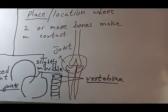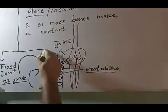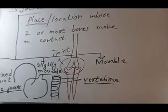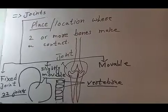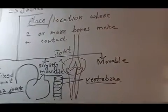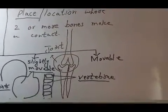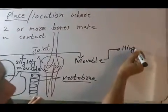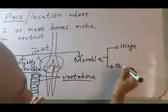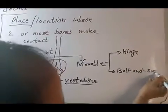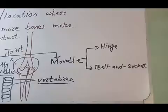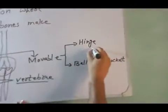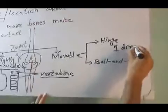The third type of joints are movable joints, which allow a wide range of movements in one plane or more than one plane. Movable joints allow a wide variety of movements. The examples of movable joints described in your book are hinge joints and ball and socket joints. Hinge joints allow movement in one direction only — a to-and-fro movement.